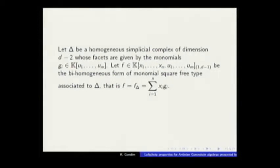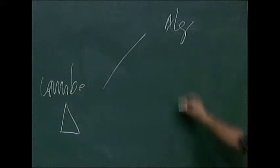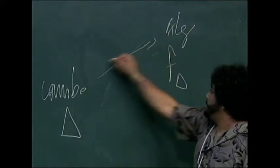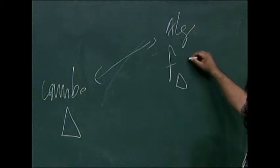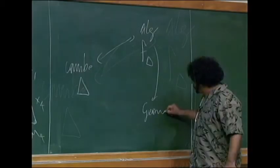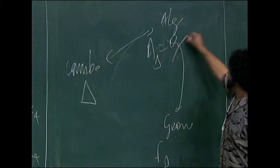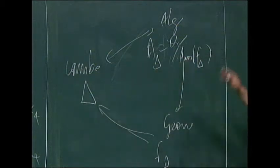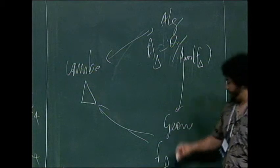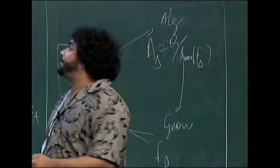Now we have a dictionary: combinatorics, the simplicial complex; algebra, the form, which by bijection, if you've got the simplicial complex, you produce the form and vice versa; and the geometry. You can think in any way. In this article, I will show you that the combinatorics determines the algebraic properties of A.